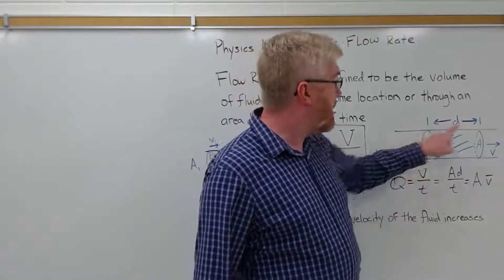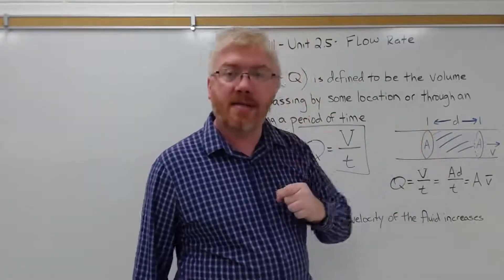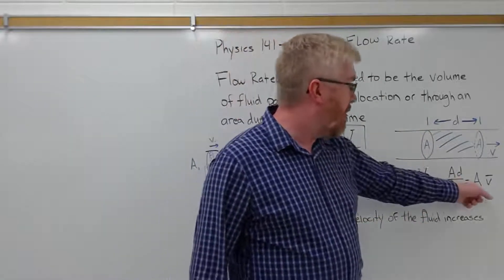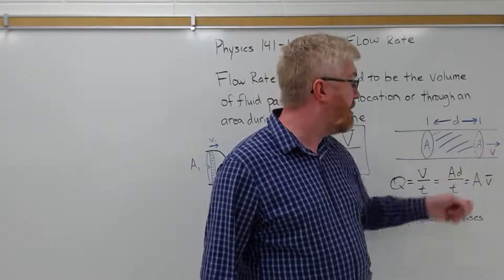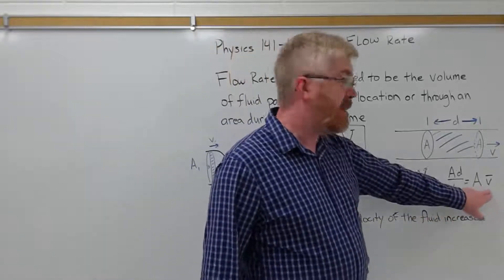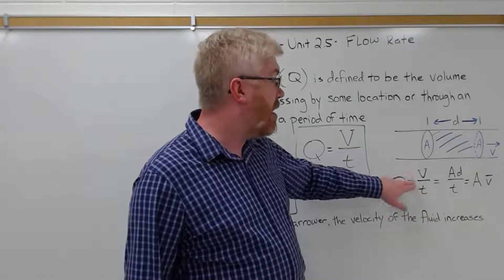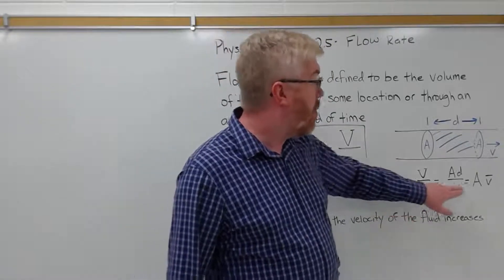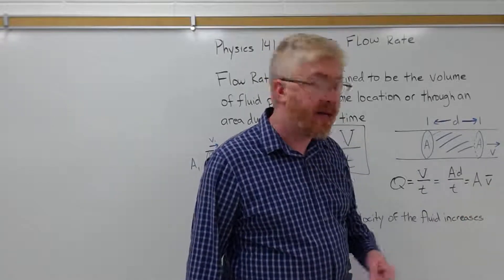Well, D is changing with time, right? The area is not. The tube size isn't changing. So if you pull off that A, D over time, how fast the fluid is moving with respect to time, is the average velocity. So the flow rate can be defined as volume over time, or the area, the cross-sectional area of a fluid times its average velocity.